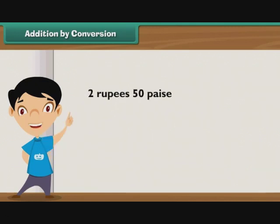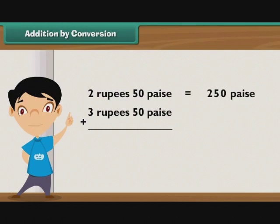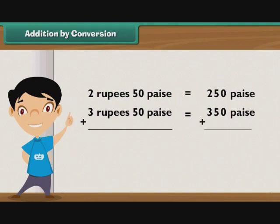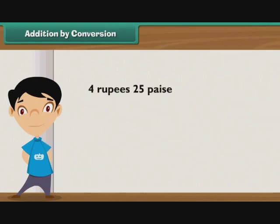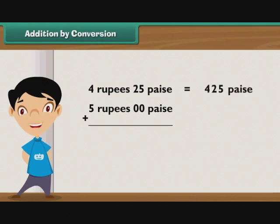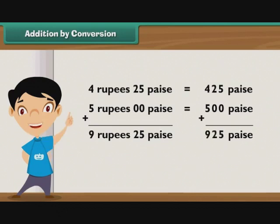Let us add 2 rupees 50 paise and 3 rupees 50 paise. 2 rupees 50 paise is equal to 250 paise, and 3 rupees 50 paise is equal to 350 paise. So we add 250 and 350 paise, which is equal to 600 paise. Now let us add 4 rupees 25 paise and 5 rupees. 4 rupees 25 paise is equal to 425 paise, and 5 rupees is equal to 500 paise. So we add 425 and 500, which is equal to 925 paise.